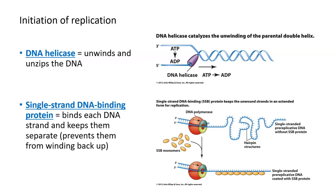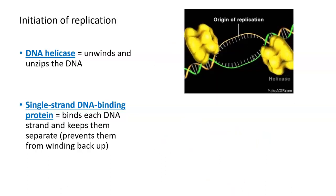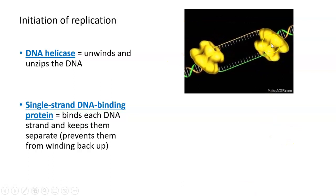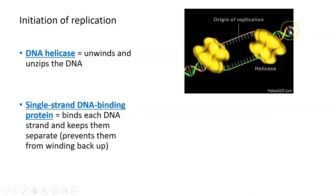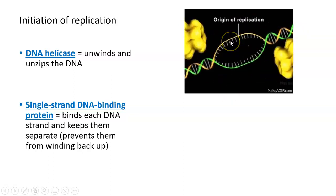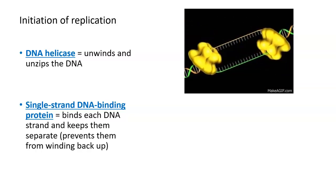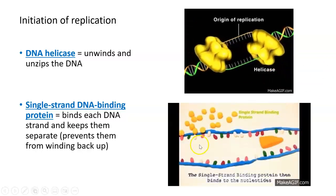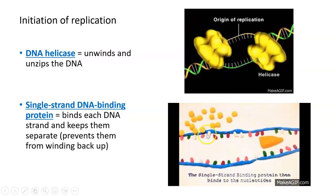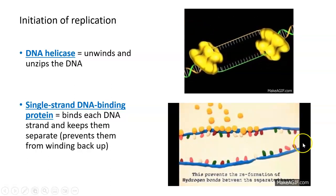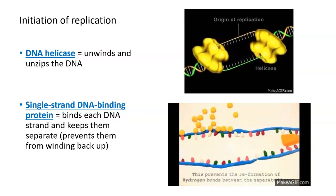These strands have a tendency to want to come back together as soon as they're separated. So in addition to DNA helicase, there are certain proteins called single-stranded binding proteins that actually keep these two DNA strands separated from each other and prevent them from rewinding back into a double helix. You can see these single-stranded binding proteins localizing along the DNA after helicase unwinds and unzips it, to make sure that the two strands stay separated.